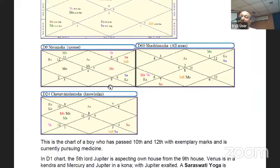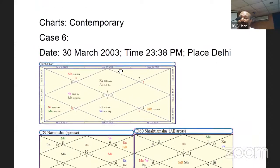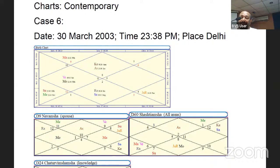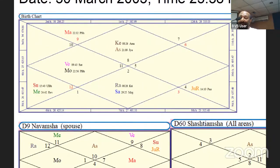Next chart, please. Now, till now, I have talked about famous personalities. Now, I'll talk about some contemporary people like us. This is the chart of a boy who passed 10th and 12th with exemplary marks and is currently pursuing his medicine. In D1 chart, if you note, the fifth lord Jupiter is aspecting his own house from the ninth house. Venus is in a Kendra and Mercury and Jupiter in a Kona with Jupiter exalted. A Saraswati Yoga is forming, but please note that it has got a little bit of blemish because Mercury is debilitated. Although the yoga is canceled because of Jupiter's aspect.